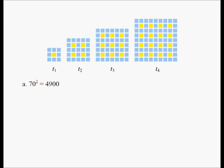So for Part A, we need to find out how many yellow squares will be needed for the 70th smallest tile — that is, how many yellow squares do we need for T₇₀. Take a look at this pattern: the first tile needs 1 yellow square, the second tile needs 4 yellow squares, the third tile needs 9 yellow squares, and the fourth one needs 16 yellow squares.